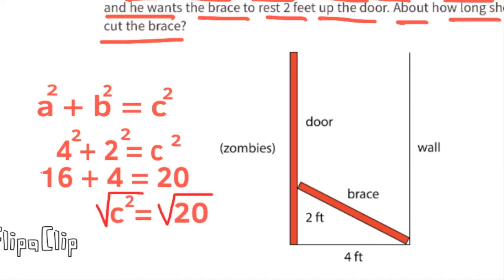Whatever the square root of 20 is would be the length of the brace. The square root of 20 is approximately 4.47, so the length of the brace should be cut to about 4.47 feet.